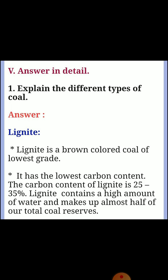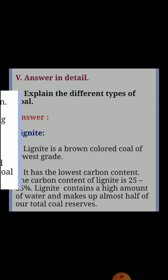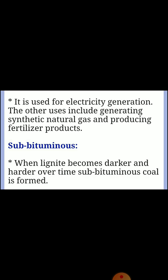Fifth section: answer in detail. Question one: explain the different types of coal. Lignite: Lignite is a brown-colored coal of the lowest grade. It has the lowest carbon content — 25 to 35 percent carbon. Lignite contains a high amount of water and makes up almost half of our total coal reserves. It is used for electricity generation. Other uses include generating synthetic natural gas and producing fertilizer products.